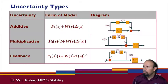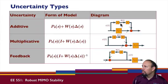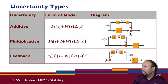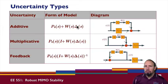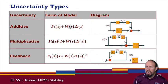First, we illustrate a number of different uncertainty types. Here is the additive uncertainty type: we have our nominal plant in parallel with our uncertainty, so the two add together — that's why it's called additive uncertainty. W is a weighting matrix, and generally the weighting matrix is chosen so that the norm of delta can be less than or equal to one.